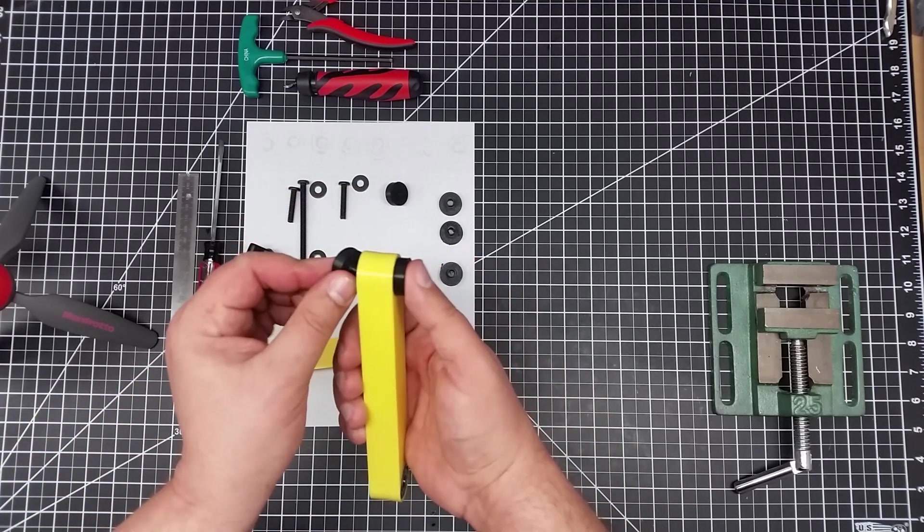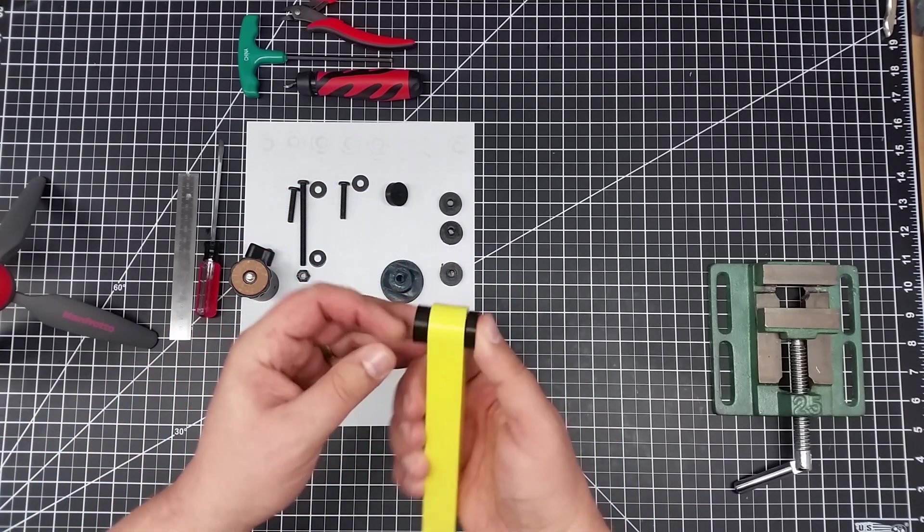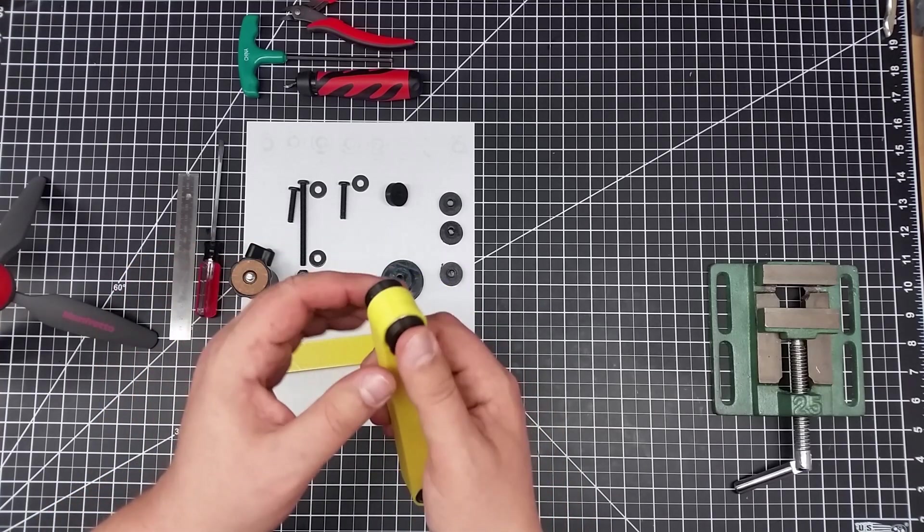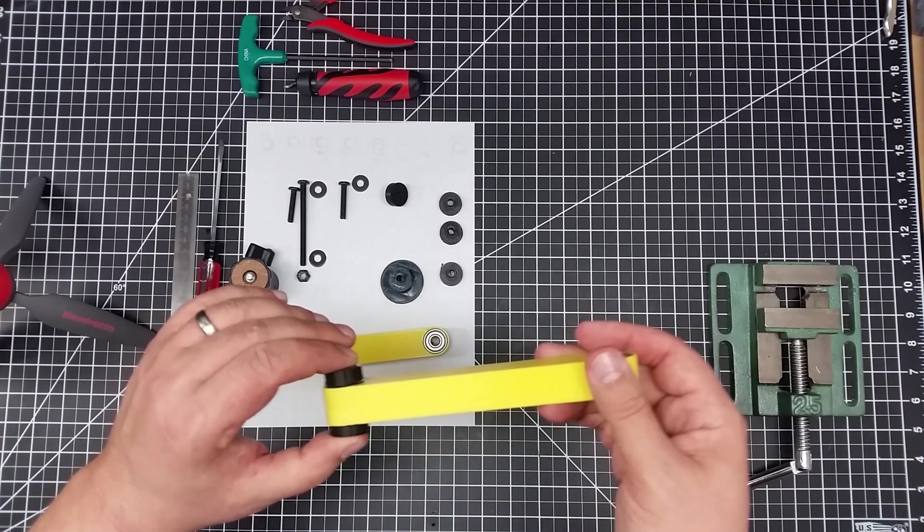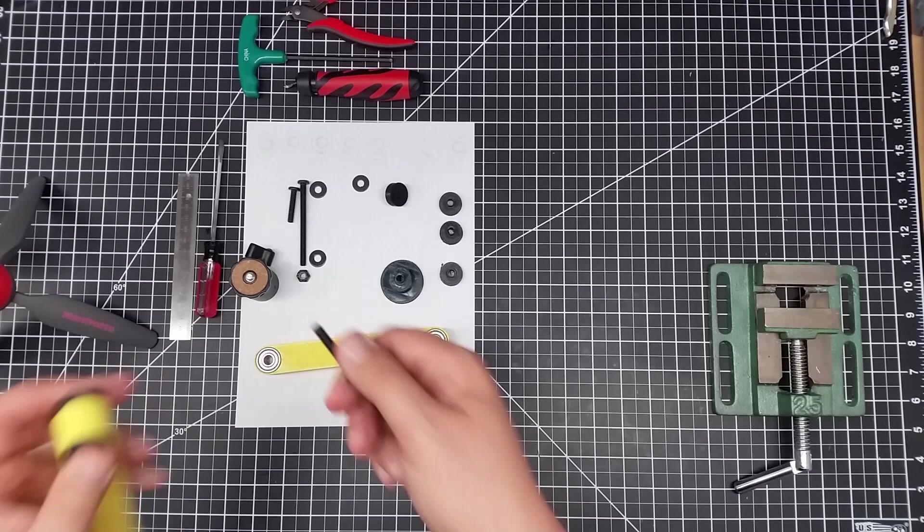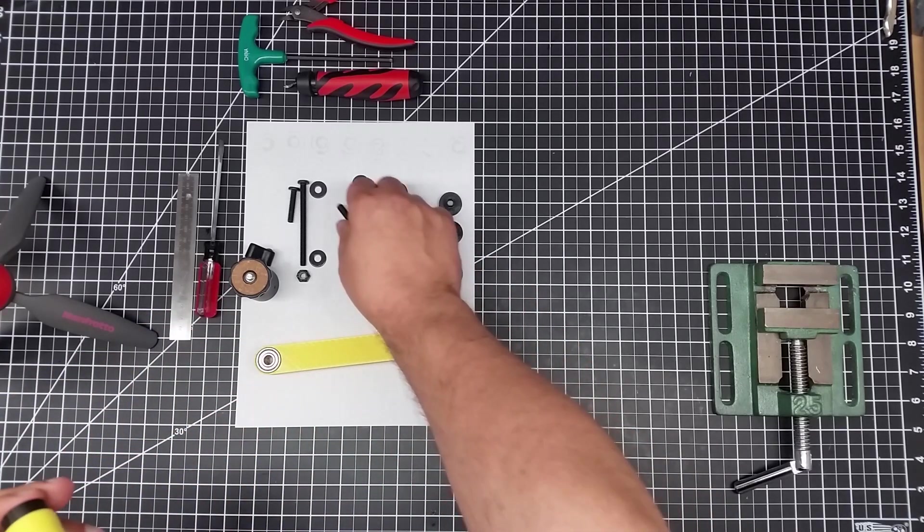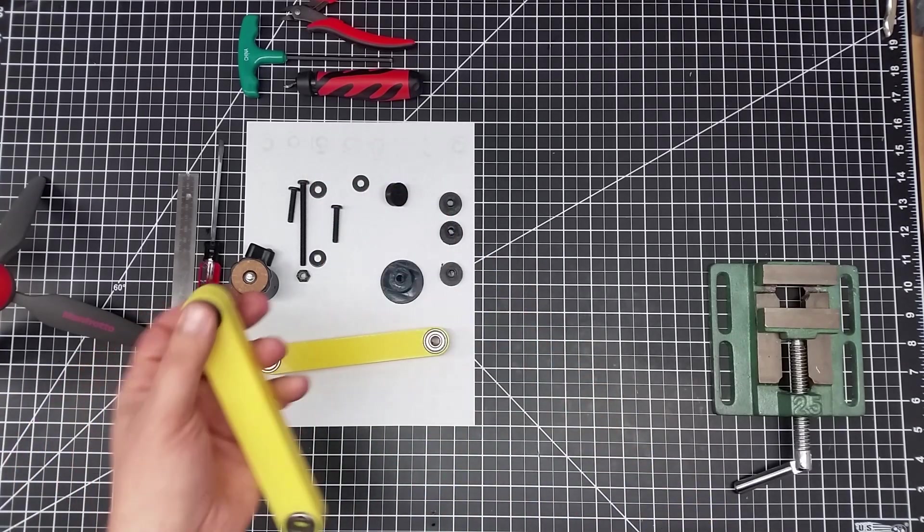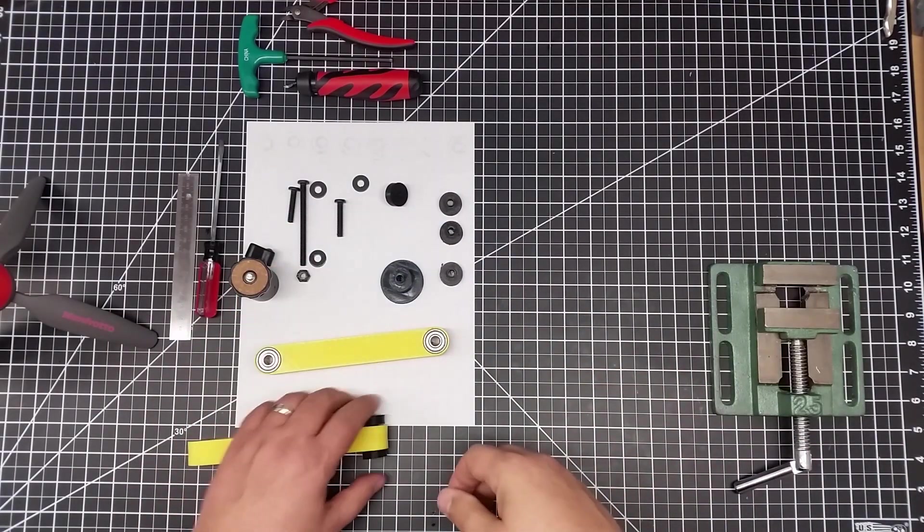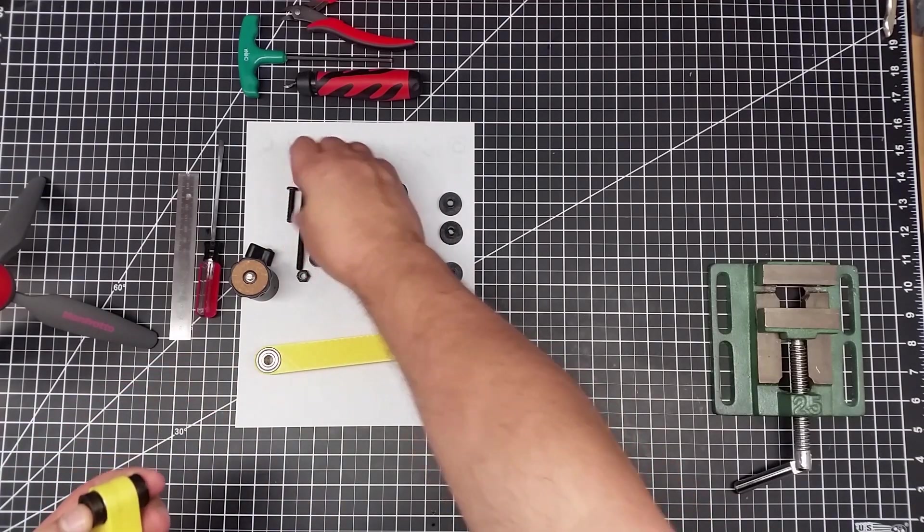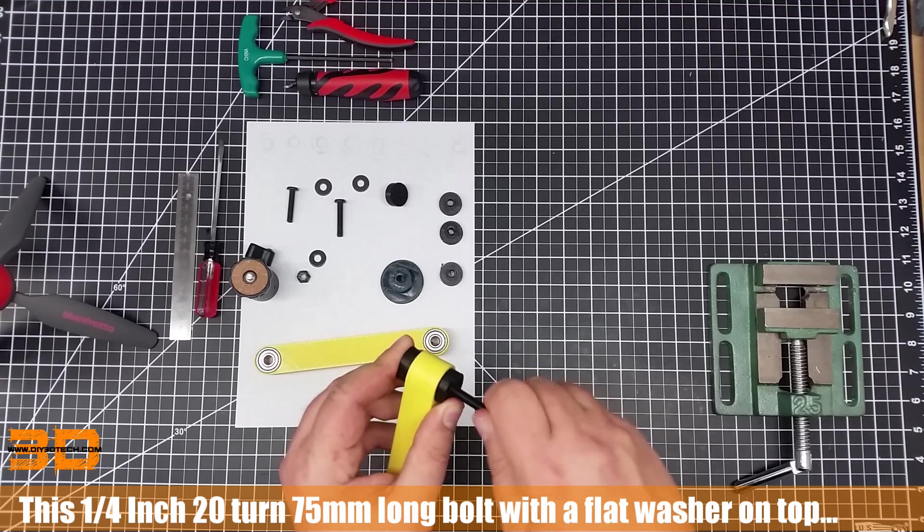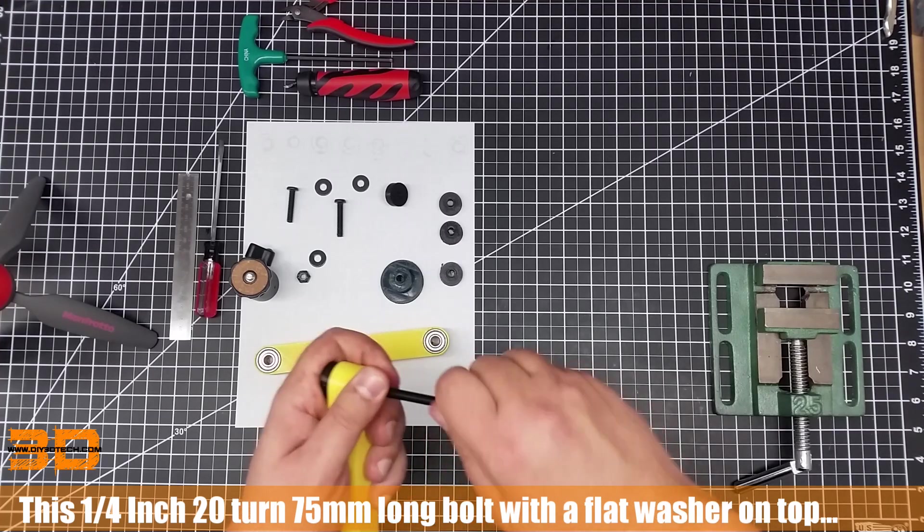And so what this does is actually slides in like that. And then what will happen is this piece will slide in like so. Now these should be a little bit snugger fit. It shouldn't be super tight. If they're too tight, you might want to take a little bit of sandpaper, but they should not be loose. And so they will pull down. And then basically what will happen is the bolt will pull through the two pieces.